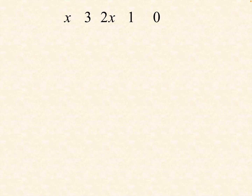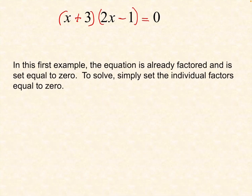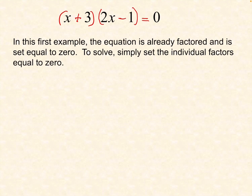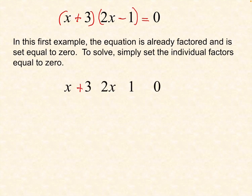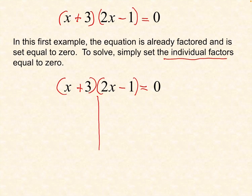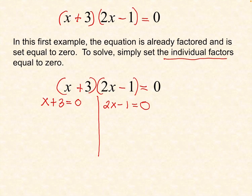We have here an example: x plus 3 multiplied by the quantity 2x minus 1 is equal to 0. This is already written in factored form and it is equal to 0. To solve, you simply set the individual factors equal to 0. We're going to separate the two factors — x plus 3 equals 0, and 2x minus 1 equals 0. This is what we call the zero product property.